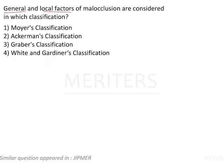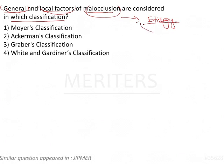The question asks: general and local factors of malocclusion are considered in which classification? So the question is about general and local factors which cause malocclusion — that is, etiology. The classification being asked about is the classification of the etiology of malocclusion, and not the classification of the malocclusion itself.